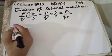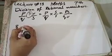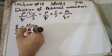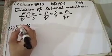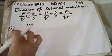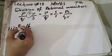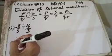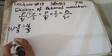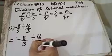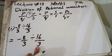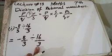इसके लिए हम देखते हैं: 8 over 3 divided by 16 over 3. आप देख रहे हैं इनका denominator क्या है? वो same है। अब हमने सबसे पहले क्या करना है? इसके step में multiplicative inverse मालूम करते हैं और फिर multiply कर देते हैं dividend के साथ according to the rule of multiplication.